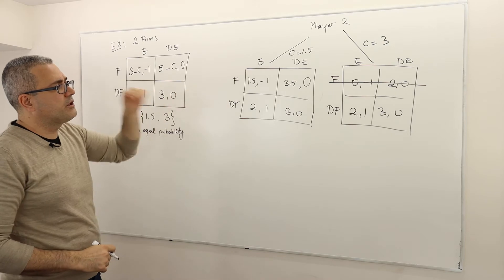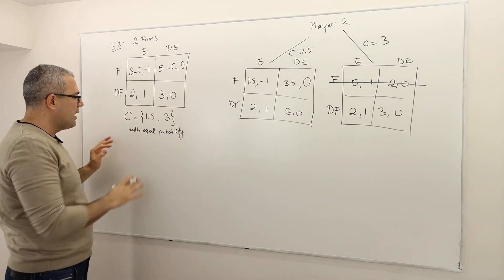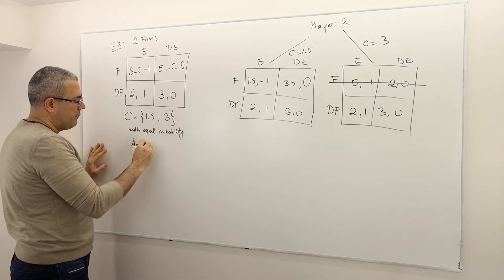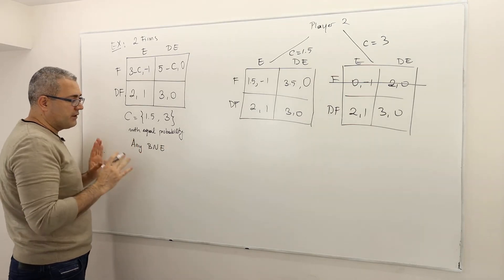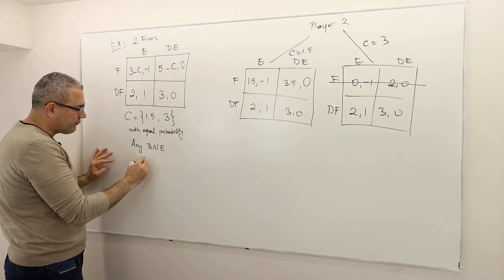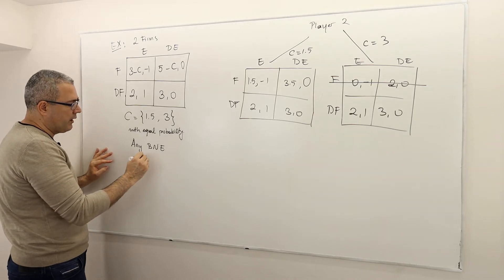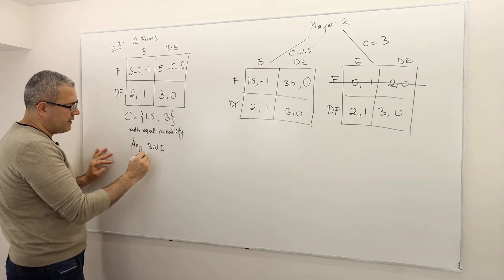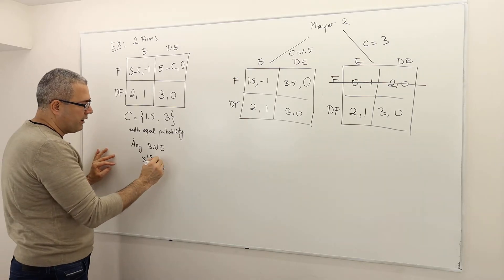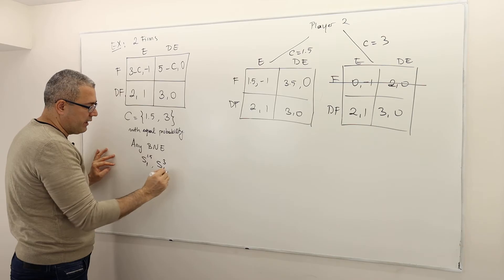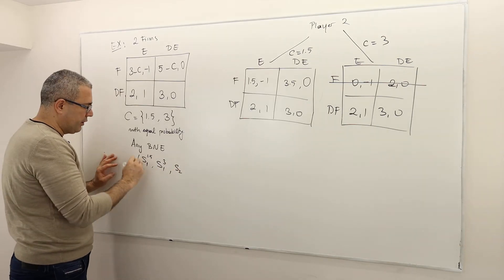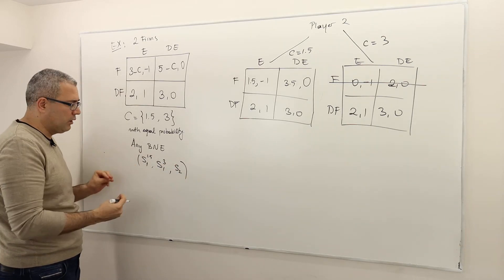So here, there's no strict domination. Therefore, in any Bayesian-Nash equilibrium, the strategy profile should be: strategy for player 1 if C equals 1.5, strategy for player 1 if C equals 3, and then strategy for player 2. This is what the strategy profile will look like.